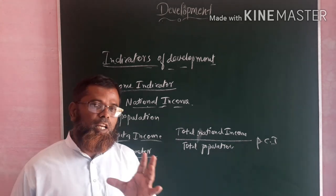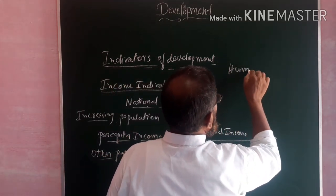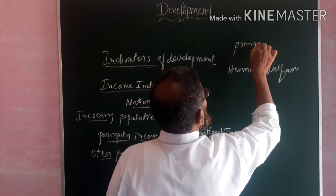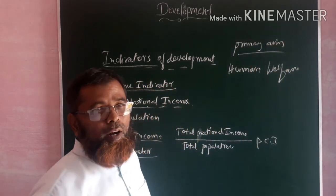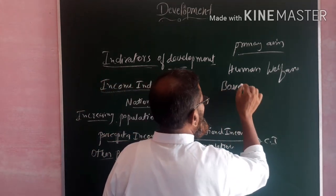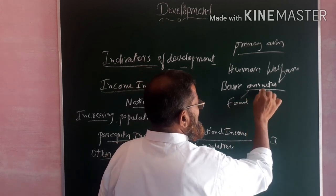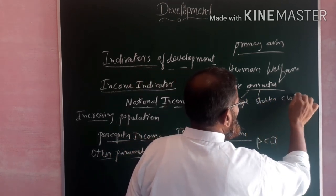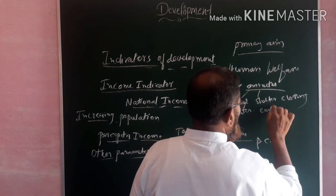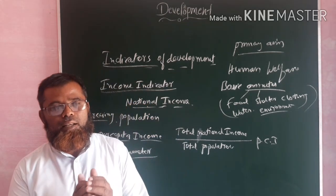Every economy has a primary aim, and that is human welfare. Human welfare means providing all the basic amenities to the people — like food, shelter, clothing, clean water, and a clean environment. If these basic amenities are available to everyone, that is called real development.